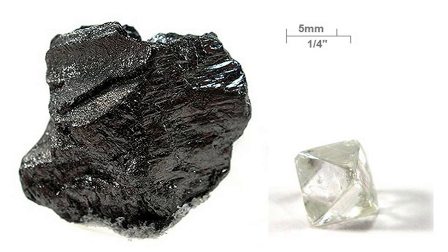Another source puts the amount added to the atmosphere since 1750 at 879 Gt, and the total going to the atmosphere, sea, and land such as peat bogs at almost 2,000 Gt. Carbon is a constituent of very large masses of carbonate rock. Coal is very rich in carbon and is the largest commercial source of mineral carbon, accounting for 4,000 Gt or 80% of fossil fuel. Graphite is found in large quantities in the United States (mostly in New York and Texas), Russia, Mexico, Greenland, and India. Natural diamonds occur in the rock kimberlite, found in ancient volcanic necks or pipes. Most diamond deposits are in Africa, notably in South Africa, Namibia, Botswana, the Republic of the Congo, and Sierra Leone. Diamond deposits have also been found in Arkansas, Canada, the Russian Arctic, Brazil, and in Northern and Western Australia.